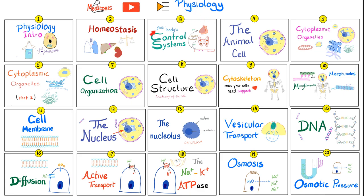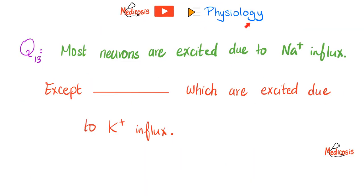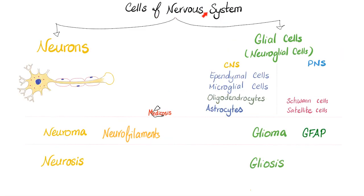Please watch these videos in order. Let me answer the question of the previous video: most neurons are excited due to sodium influx, except for the nerve cells inside your inner ear, which are excited due to potassium influx.